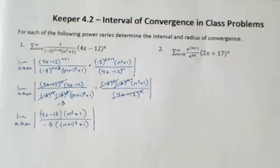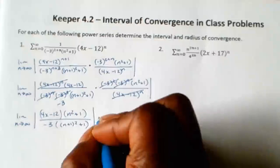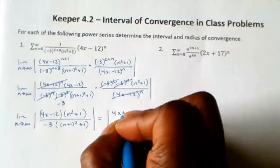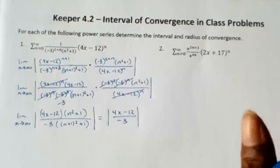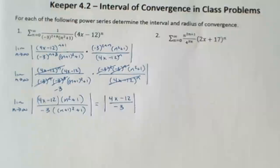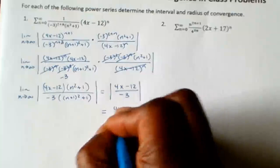We're taking the limit as n goes to infinity, so n is the variable. The degree of the numerator is 2 (squared) and the degree of the denominator is also squared, so I just take the lead coefficients. The lead coefficient on top is (4x minus 12) and on the bottom is negative 3, giving (4x minus 12) over negative 3. Because it's in absolute value, I can write this as |4x minus 12| over 3.